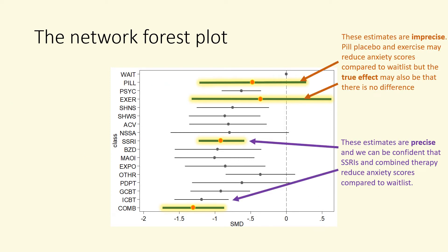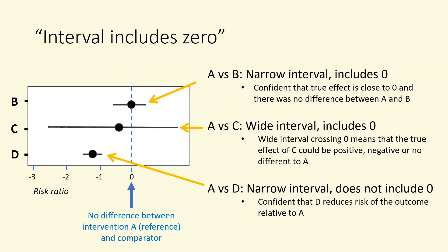For the interventions pill placebo and exercise, our estimates are not precise and the interval does include zero. Exercise may be more effective in reducing anxiety scores than wait list, but it could be less effective. These imprecise estimates may come from small studies. Whereas for SSRIs and combined therapy's effects relative to wait list, our estimates are precise on the scale of this outcome, and we are confident that the true effect of the intervention in the population is within this small range. Within the evidence report, you may see the phrasing 'the interval includes zero.' If the uncertainty interval includes zero, it means that we cannot say there was a difference between the interventions for that outcome. But the size of the interval also matters: if it is precise, we are confident that the effect of the intervention is close to zero; if the interval is wide, we cannot be so confident that there is no difference between the intervention and the reference.